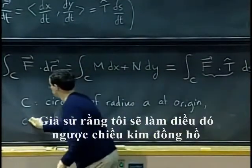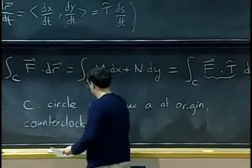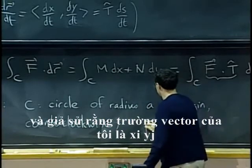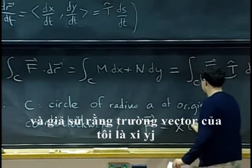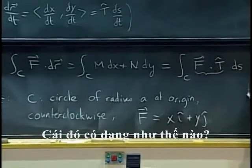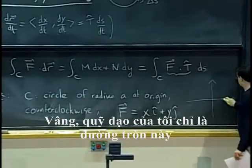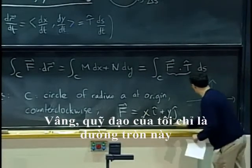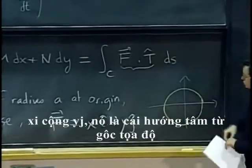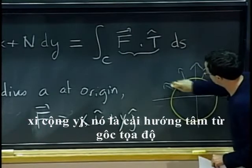Let's say I am doing that counterclockwise. And let's say that my vector field is xi plus yj. What does that look like? My trajectory is just this circle. My vector field, remember xi plus yj, that is the one that is pointing radially from the origin.